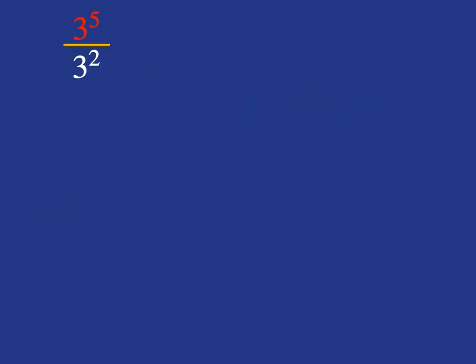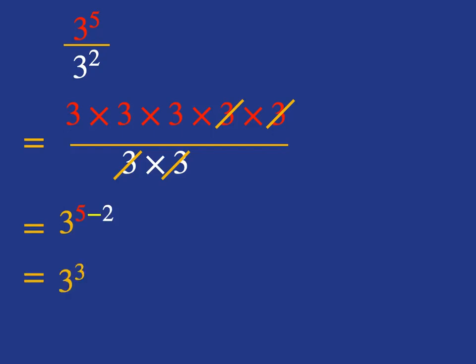What about 3 to the 5 over 3 to the 2? Again, what is 3 to the 5? What is 3 squared? Now you can see that 2 of the threes on the bottom cancels with 2 of the threes on the top. And so what you're left with is, the number of threes you're left with is 5 minus 2. And so what you've got is 3 to the power of 3, which is 27.